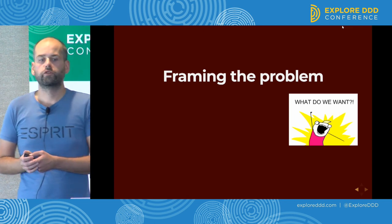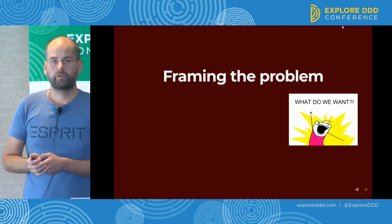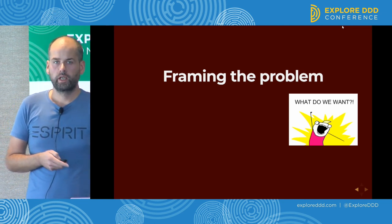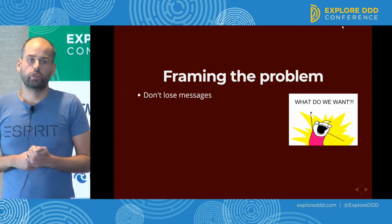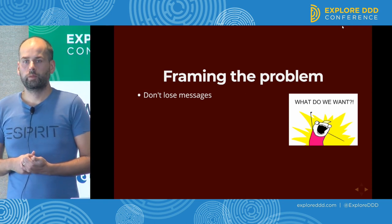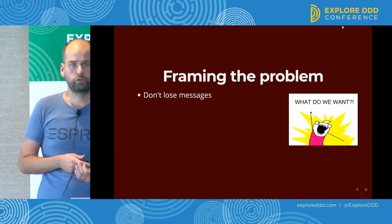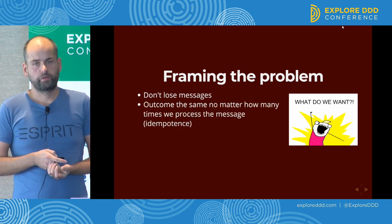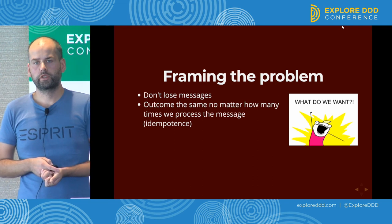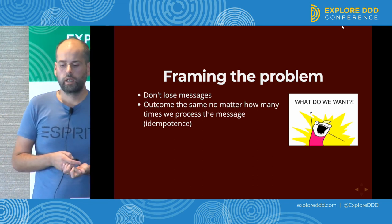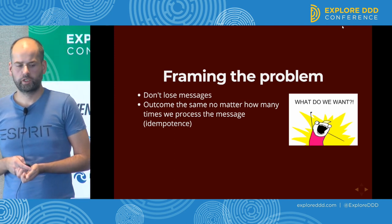The red team tried to frame the problem — what they are actually dealing with when processing messages from queues. First, you don't want to lose messages, because losing orders is not going to help you build a startup that disrupts the delivery market. Then you don't want to invoke the business logic twice if you receive a duplicate message. You want the outcome of processing to be the same no matter how many copies of the message have been delivered. That's idempotence.